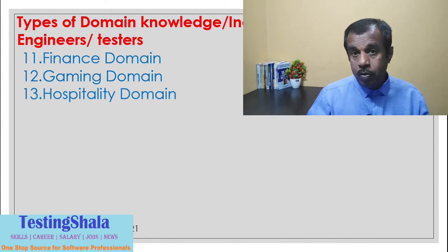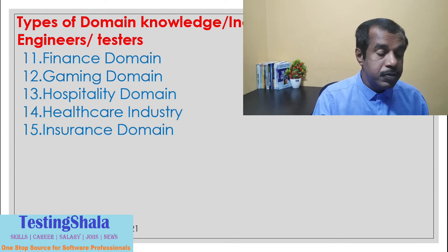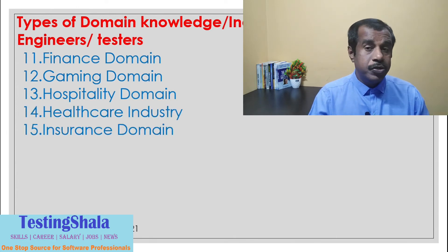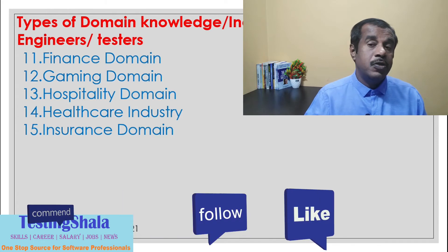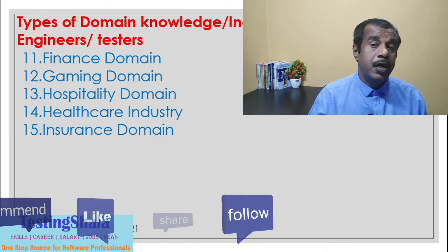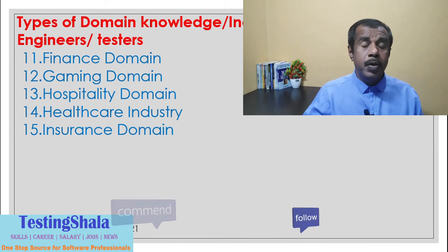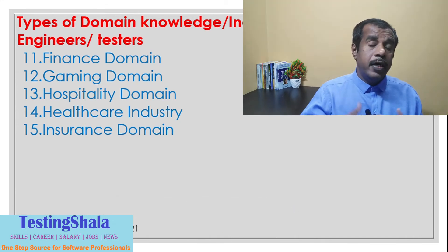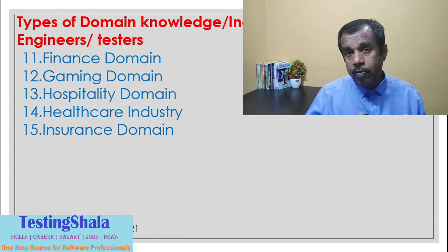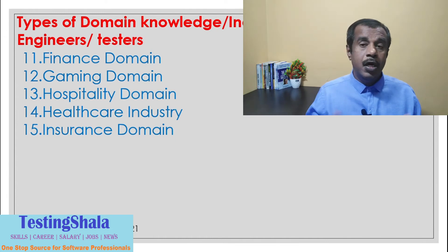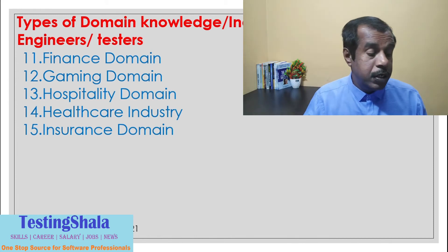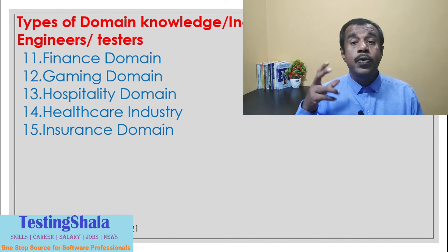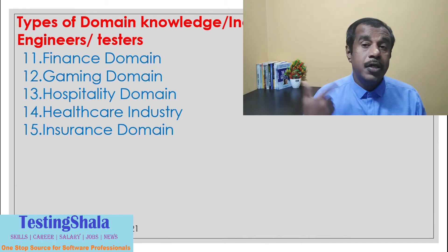The next is the insurance domain. It could be car insurance, bike insurance, motor insurance, health insurance, or household insurance. Many types of insurance exist, and every insurance agency or industry works in a totally different way. To work in this domain, you need specific knowledge in order to operate effectively.